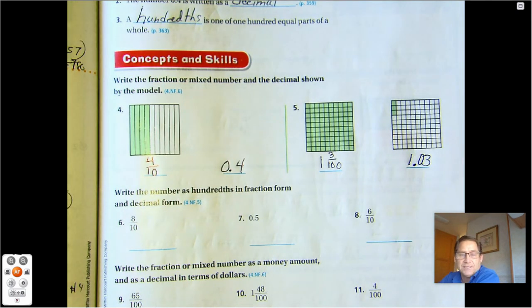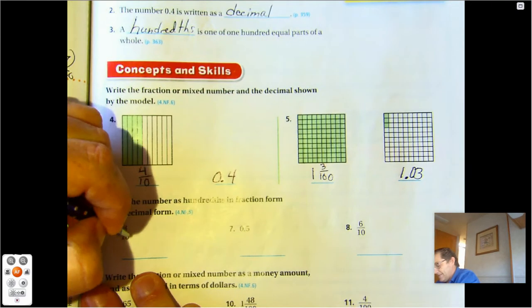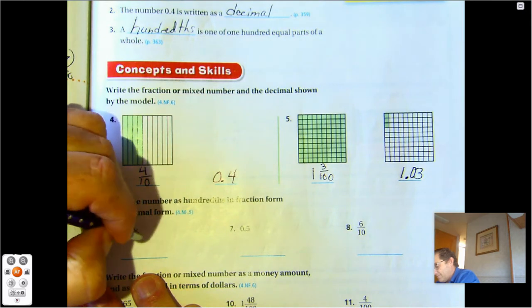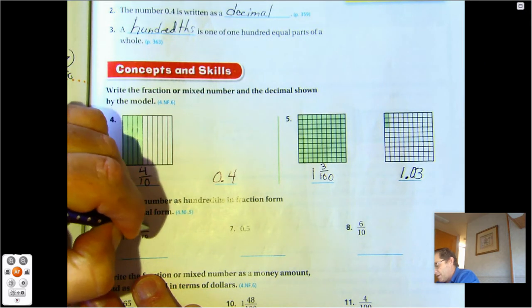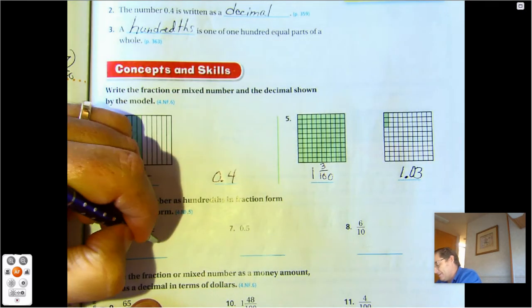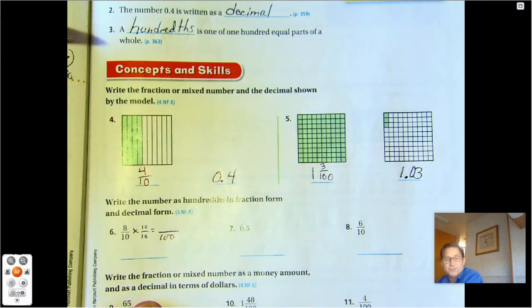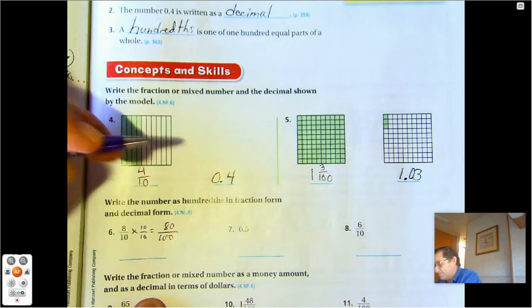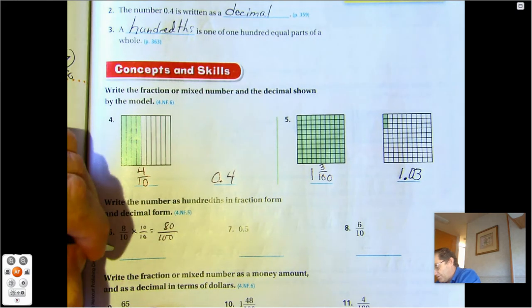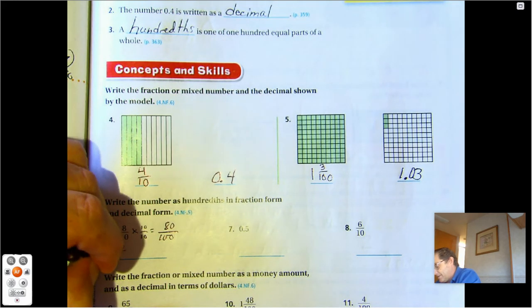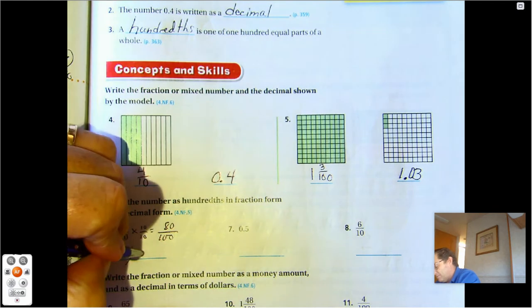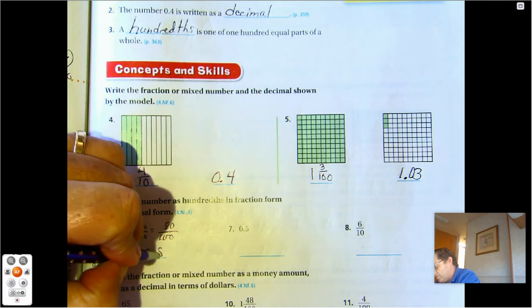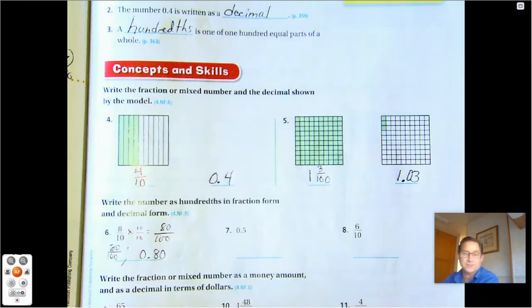Number six, write the number as hundredths in fraction form and decimal form. As hundredths. So right now this is eight tenths. So we're going to rewrite that into hundredths by multiplying by ten. Now we have a denominator of hundred, and eight times ten is eighty. So fraction form is eighty hundredths and its decimal form is 0.80.